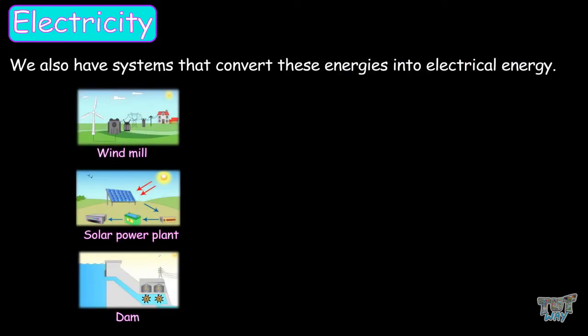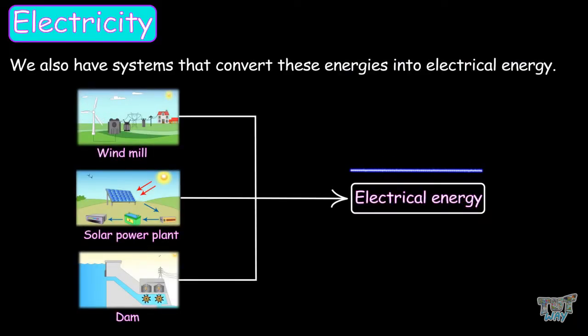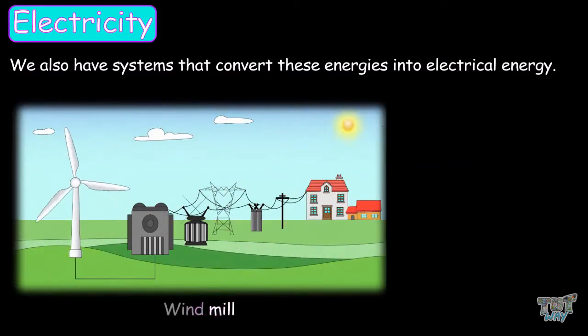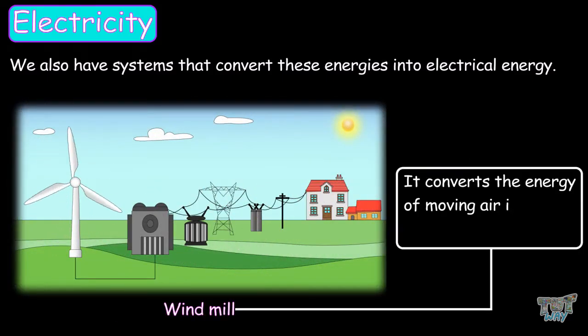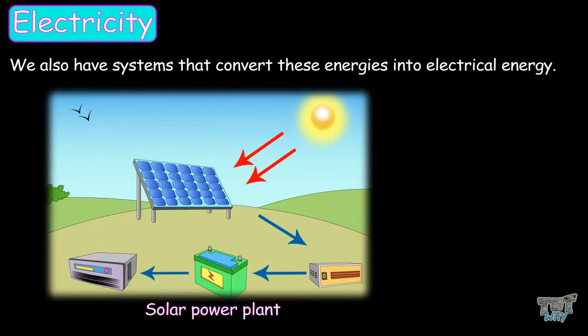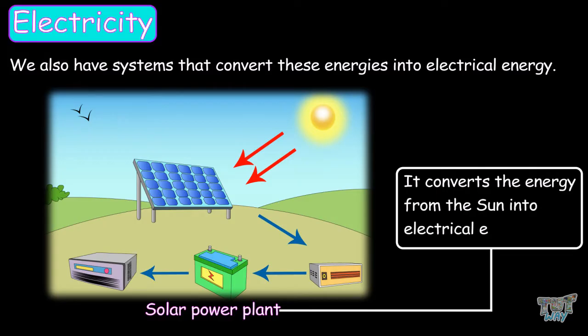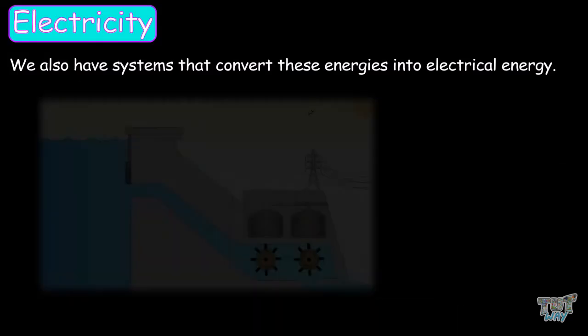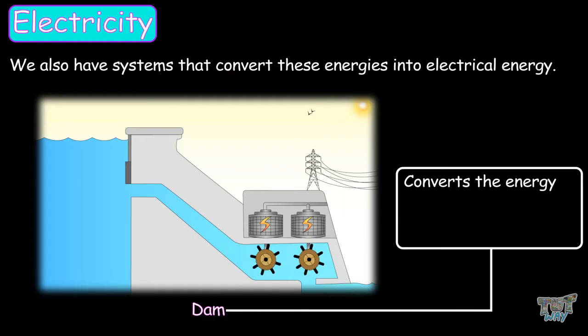We also have systems that convert these energies back into electrical energy. Like a windmill, it converts the energy of moving air into electrical energy. Solar power plants convert the energy from the sun into electrical energy. A dam converts the energy of flowing water into electrical energy.